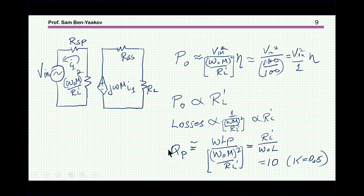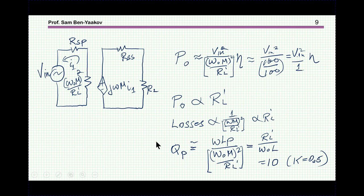There is also the issue of the quality factor. The Q of this series resonant network with the inductor and capacitor is ωL divided by R. Neglecting parasitic resistance, in this numerical case Q is around 10, which is fairly high. This means small deviations in excitation frequency or tuning will move us from the optimum point, which is another issue that must be taken into account.